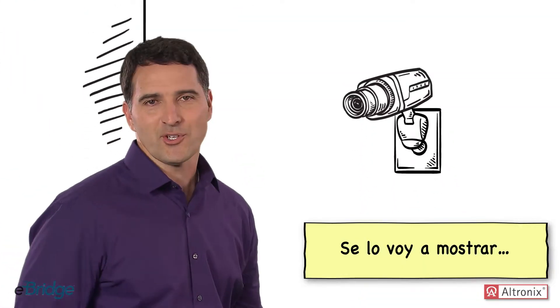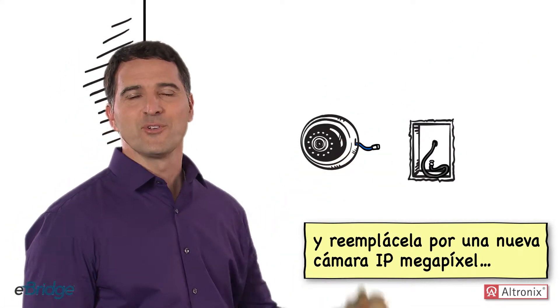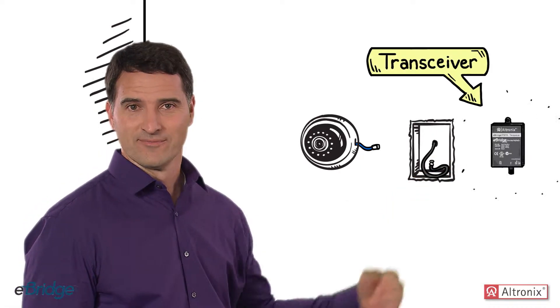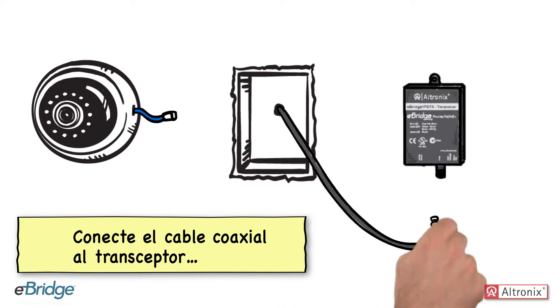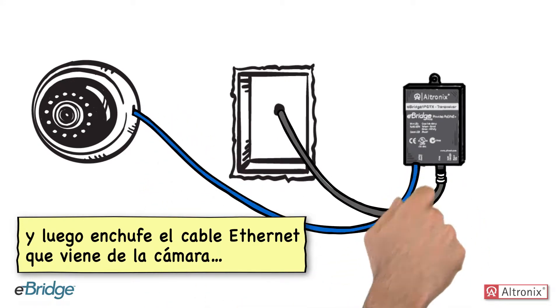Let me show you. Simply remove an old analog camera and replace it with a new IP megapixel camera and an eBridge transceiver. Attach the coax cable to the transceiver, then plug in the Ethernet cable that comes from the camera.